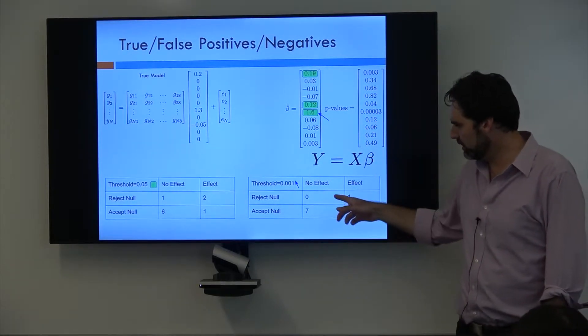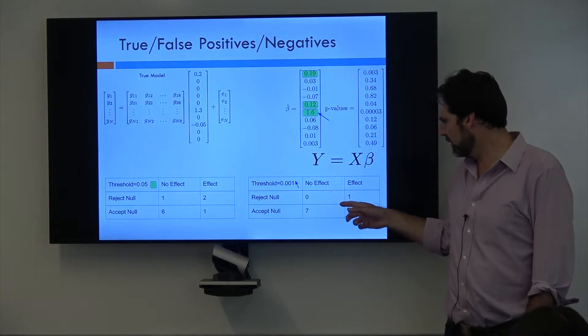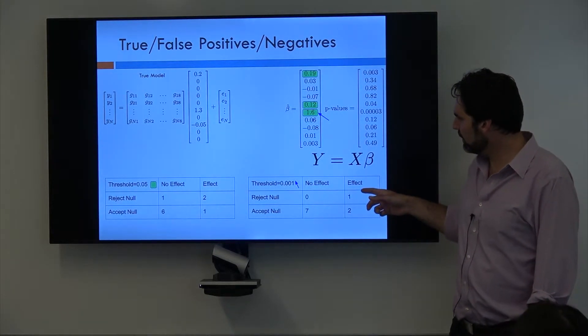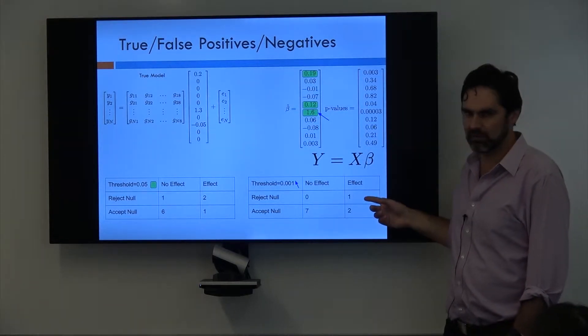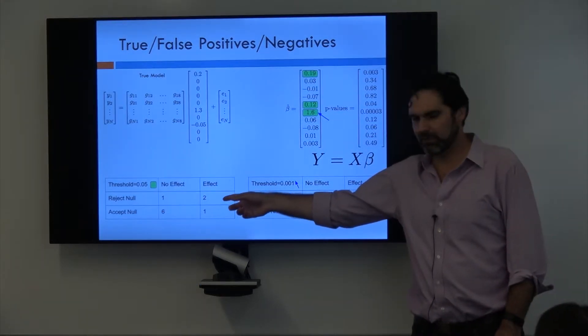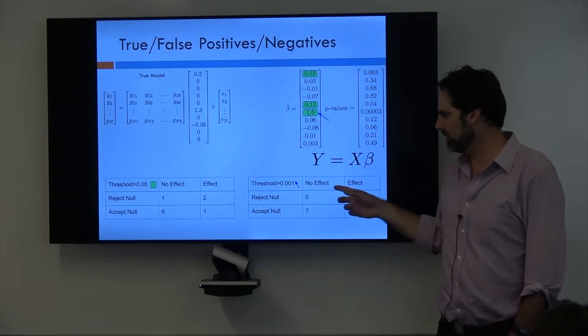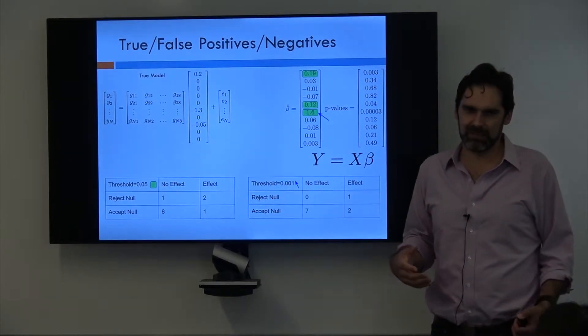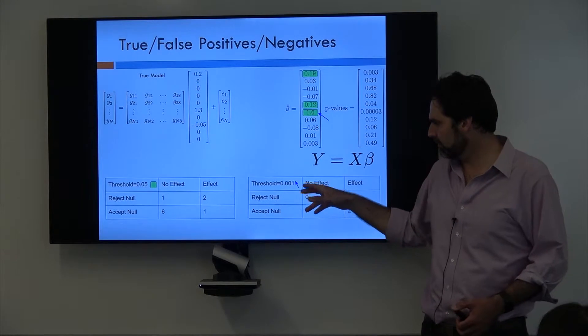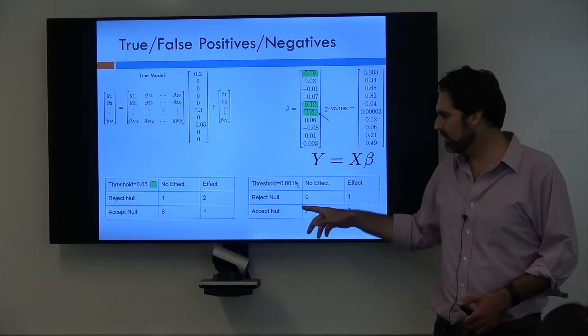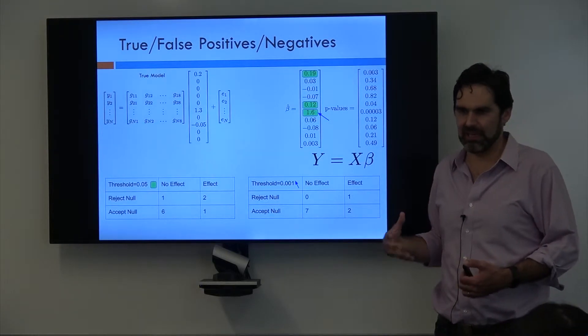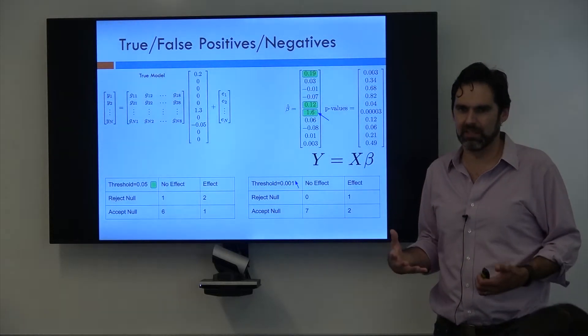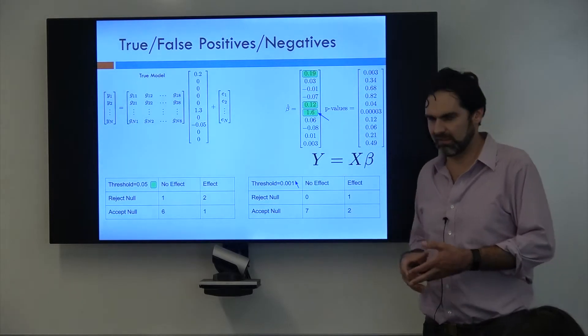So as you can see, we no longer have a false positive, but rather than of the three variants that do have a true effect, now we only actually find one of them, whereas before we found two of them. So as we increase the threshold, we have fewer false positives. Or sorry, as we make the threshold more stringent, we have fewer false positives, but we also find fewer things that actually have an effect. So there's this trade-off that you run into when you adjust this threshold.